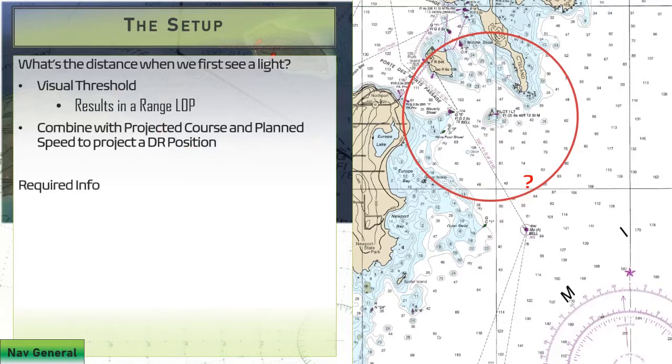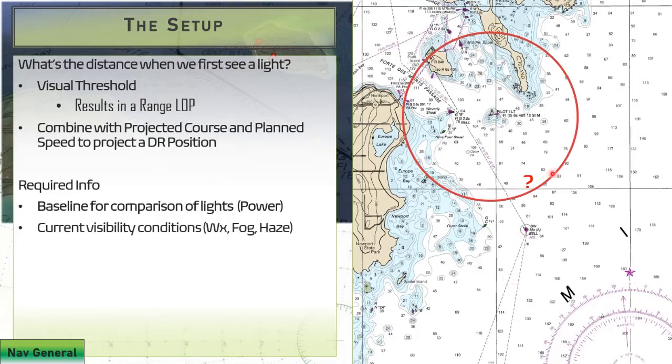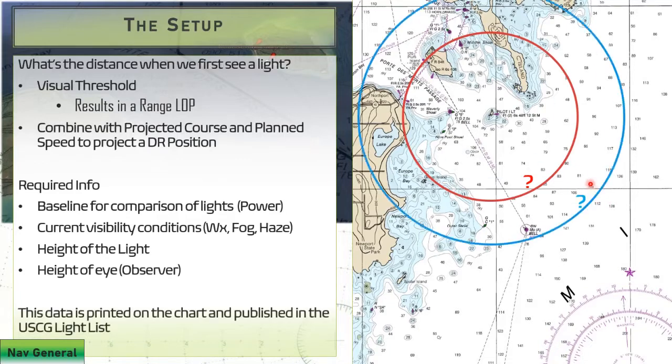What do we need to know to calculate this? We need a baseline to compare different lights. Different lights are going to have different power levels and be visible at different ranges. We're going to need to know the current visibility conditions, the height of the light, and the height of us, the observer, how high we are on our bridge or pilot house. The data that's printed on the chart, you can see a little bit here in this example. It's got 48 feet and 12 statute miles.